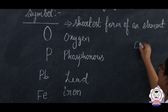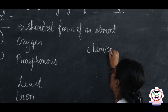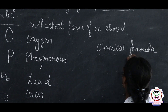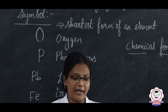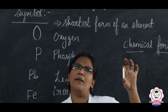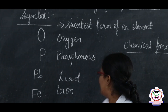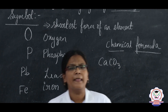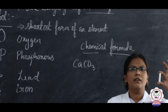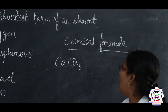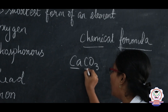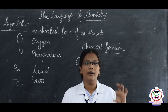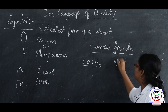Now we are going to discuss about chemical formulas. What does a chemical formula define? If some chemical is made, it has a chemical formula. For example, this chalk piece — what is the chemical formula of this chalk piece? Calcium carbonate is the chemical formula of commercial chalk pieces. The chemical formula is CaCO3. The elements present in it are calcium, carbon, and oxygen.